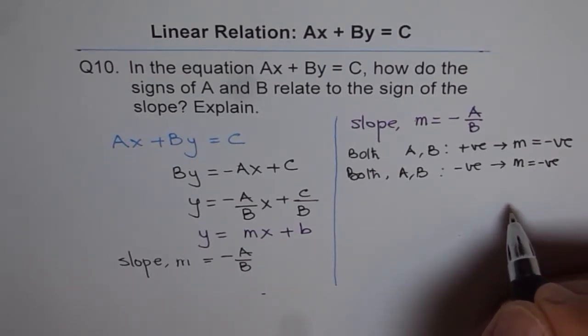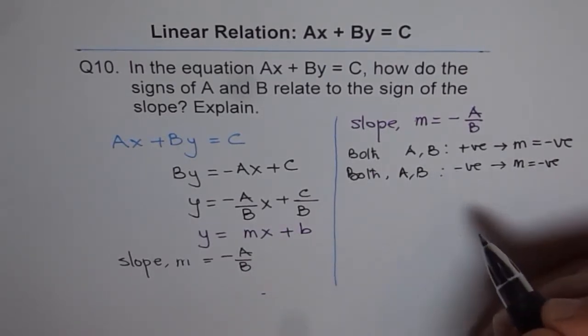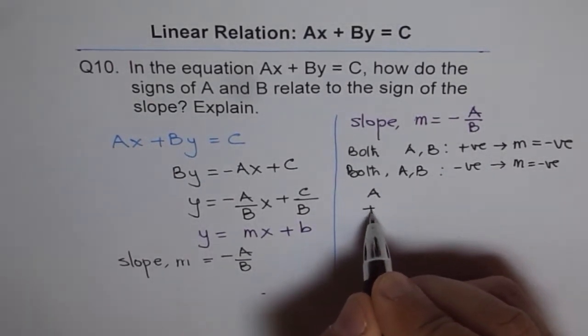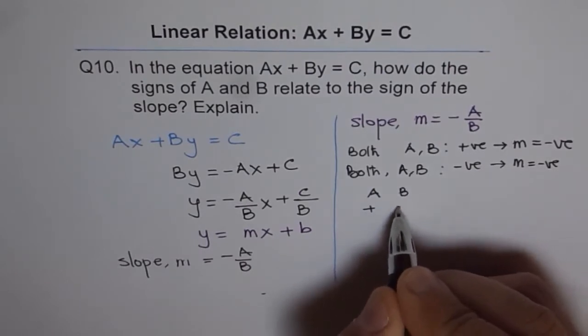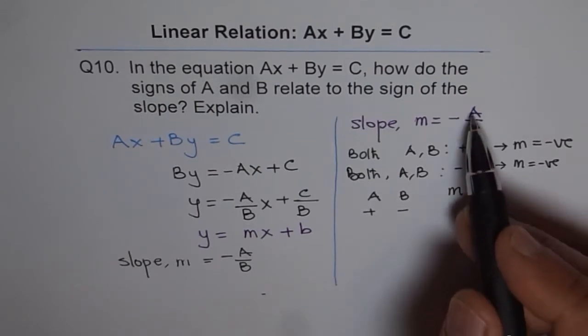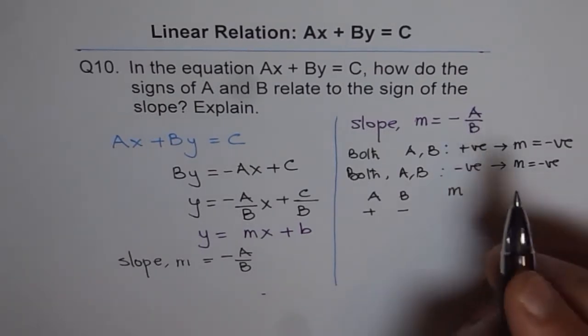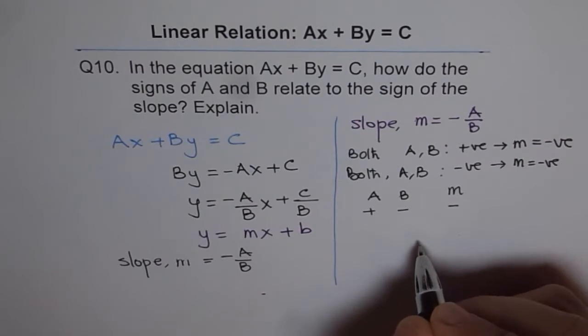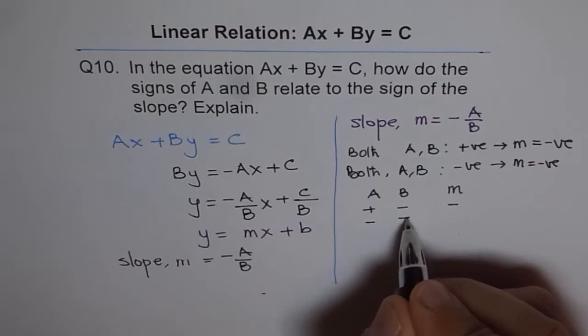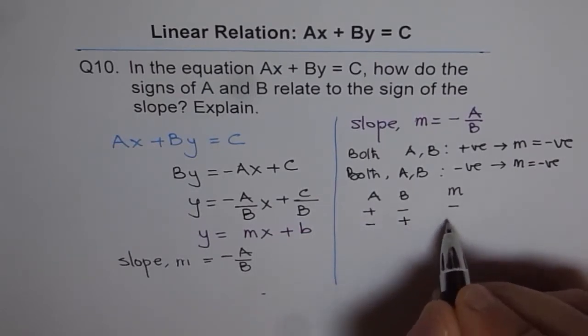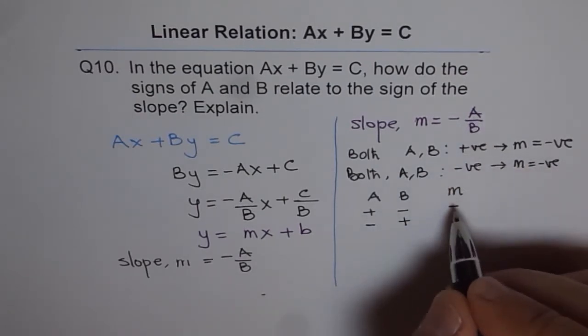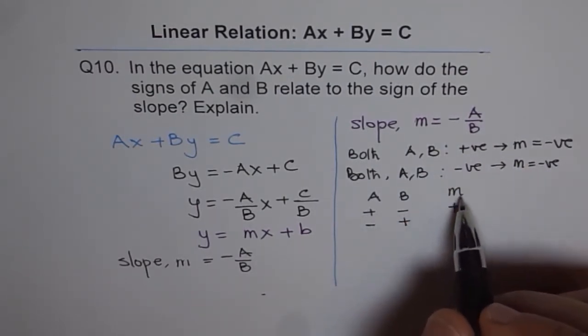Now, let us consider the case when one is positive and the other is negative. If A is positive and B is negative, in that case, what is M? In such cases, positive over negative will give us negative and when you divide two negatives, we'll get positive. It is the quotient of these two. Even if I put A as negative or B as positive, the slope will become positive. Because this will be negative and this becomes positive.